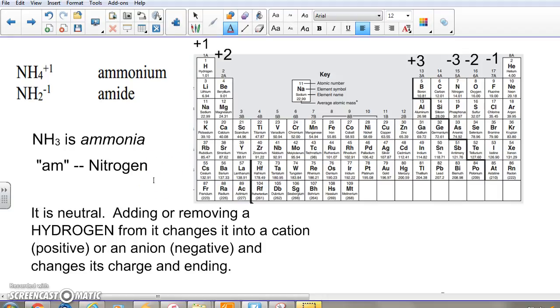So NH4 plus 1, ammonium, NH2 minus 1, amide, and NH3 will not be on the ion sheet because that is not an ion, it is a neutral compound.